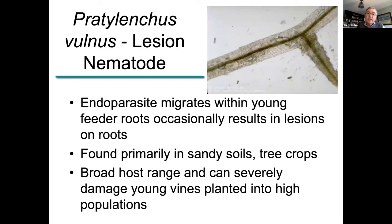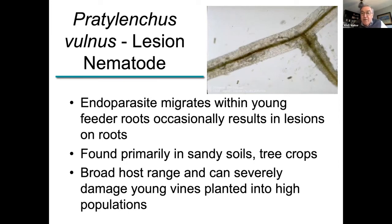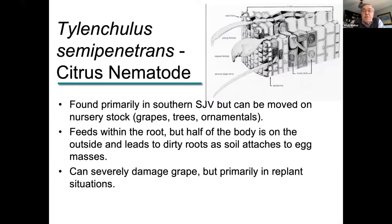The lesion nematode is another endoparasite that gets into the root system, moves through it, and causes lesions on the outside of the root that can be pretty severe. It's very commonly associated with tree crops like walnuts and apples. It used to be considered primarily a sandy soil situation, but it's not all that particular about soil. It's been moved around by propagation material and is pretty generalized now. It can cause severely damaged young vines if populations are relatively high. One way to suppress it is through fallow, which we'll discuss. The citrus nematode — also known as the dirty root nematode — goes halfway in, forming a gelatinous matrix on the outside where it exists, and soil particles like sand and silt stick to it. Thought to be primarily a Southern San Joaquin Valley problem in the past, but not so much now — it's moved around pretty effectively on propagation materials through the state.